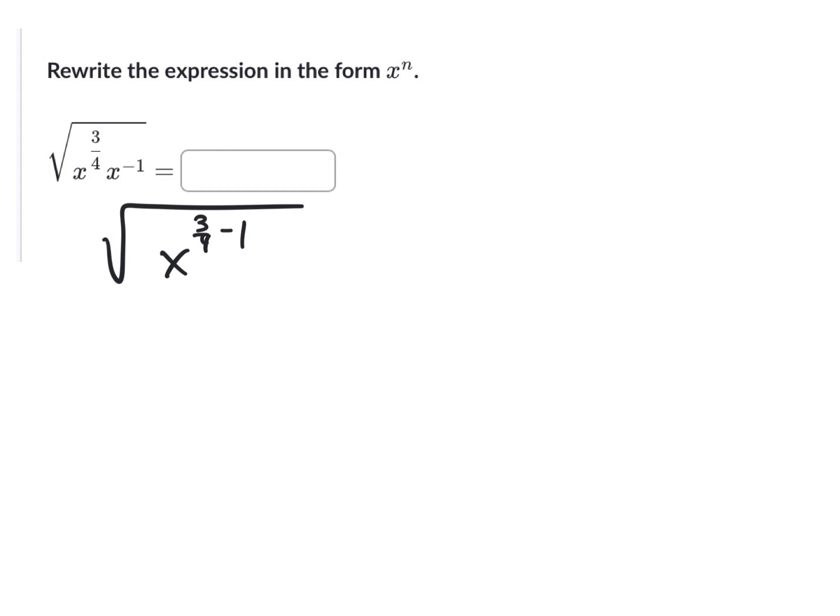Now remember, when you're adding fractions, you need common denominators. So we could think of this as one over one. And then if we wanted common denominators, we could actually just make this into, what's a way to think of denominator four that's equal to one? It would just be four over four. Okay, so this is the square root of x to the three-fourths minus four-fourths. So that's the same thing as square root of x to the negative one-fourth.